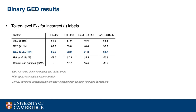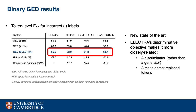We report token-level F0.5 for detecting incorrect labels. We first compare our models with previous work in a binary setting on three different benchmarks. BEA covers the full range of L1s and ability levels. FCE contains upper-intermediate learners of English. And CONO focuses on undergraduate students from an Asian language background. We can see that all our GED models outperform previous systems by large margins. We obtain a new state-of-the-art using ELECTRA, an extension of BERT with a different pre-training task — a discriminator which aims to detect replaced tokens. We believe ELECTRA's objective to discriminate between plausible and non-plausible word tokens makes it more closely related to error detection.